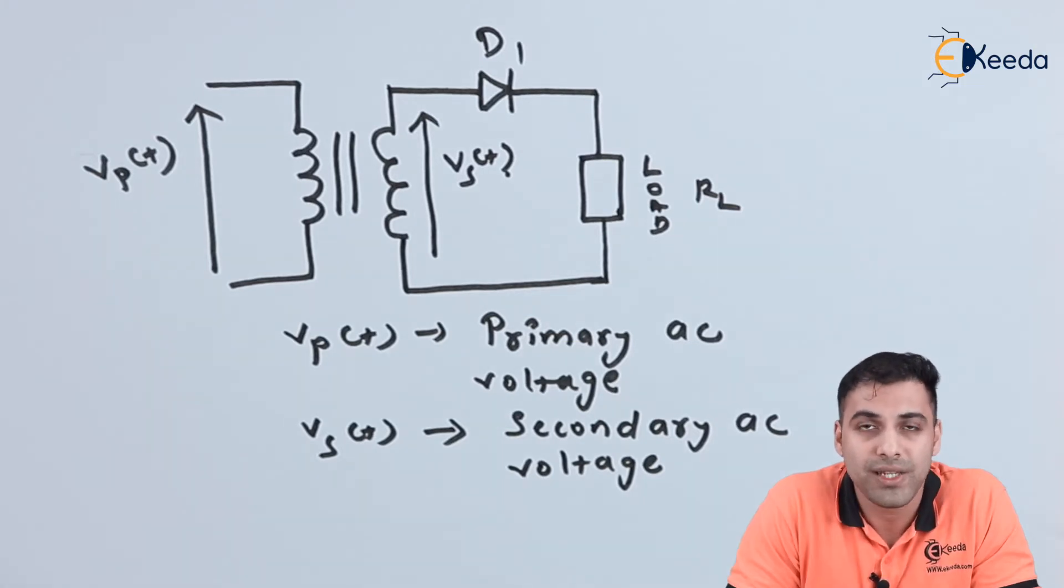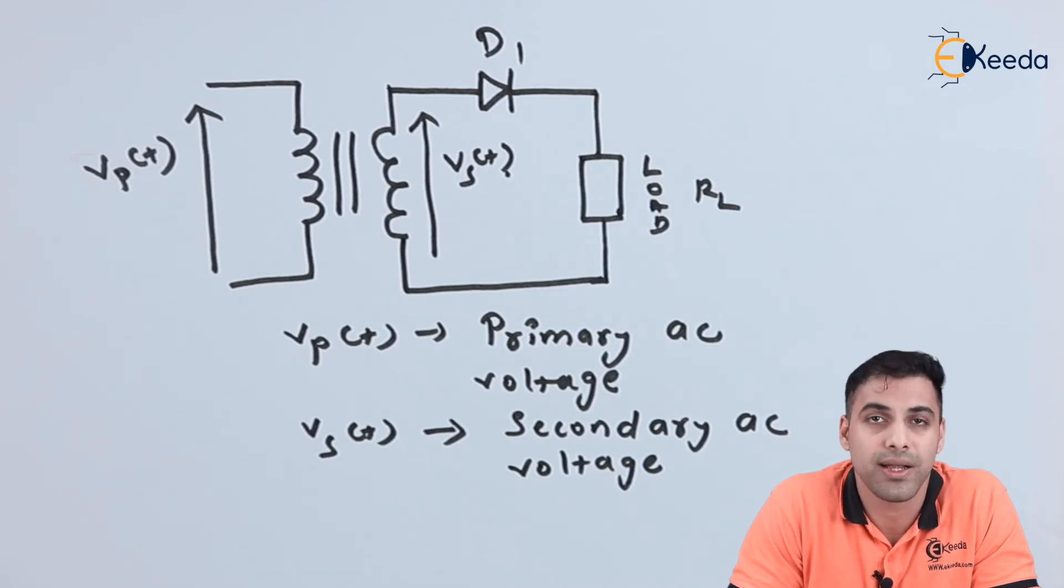To summarize, a single-phase half-wave rectifier takes a single-phase AC supply as input and there is one diode connected in this circuit and there is one load. The diode blocks all the negative cycles of the input AC supply and allows only the positive cycles of the input AC supply to flow through the load.